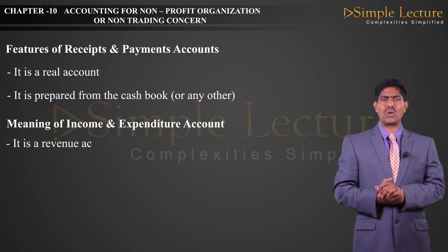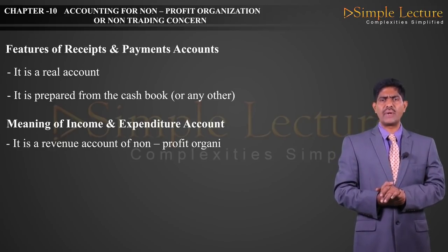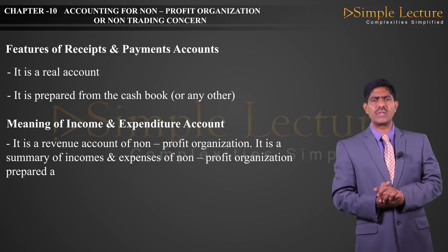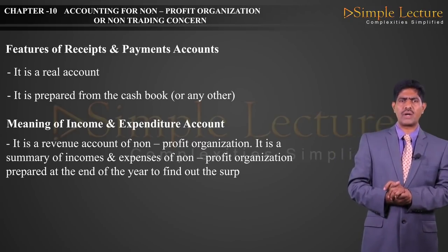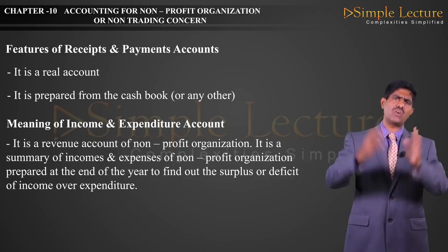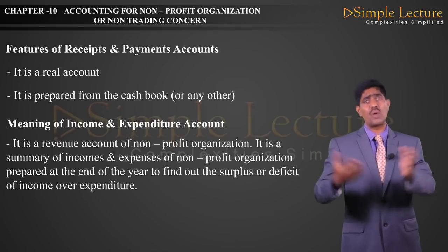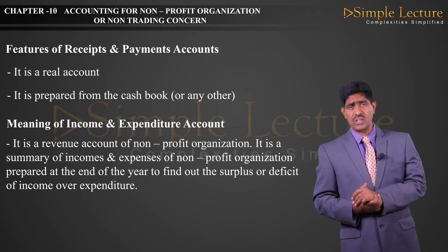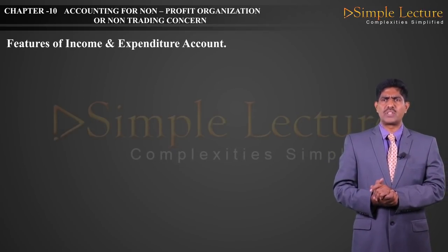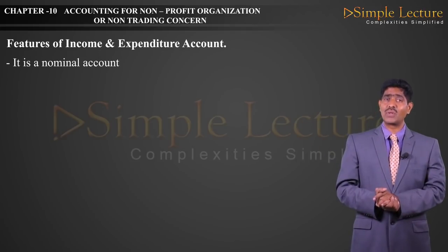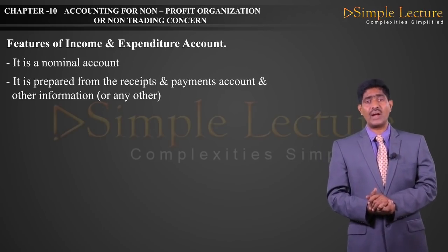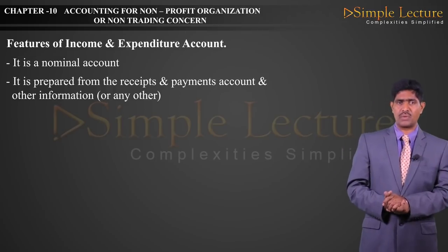Meaning of Income and Expenditure Account: it is a revenue account of a non-profit organization. It is a summary of incomes and expenses of the non-profit organization, prepared at the end of the year to find out the surplus or deficit of income over expenditure. It is a summary of revenue expenses and revenue income, prepared under Non-Trading Concern to find out surplus or deficit. It is a nominal account — we deal with only expenses and income. It is prepared from the Receipts and Payments Account and other relevant information.